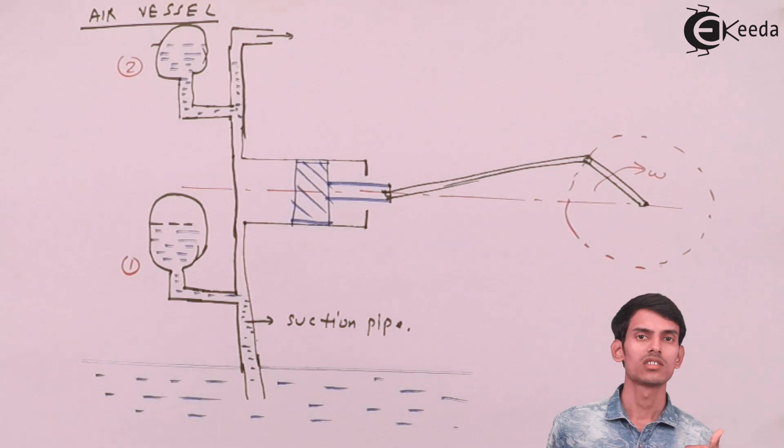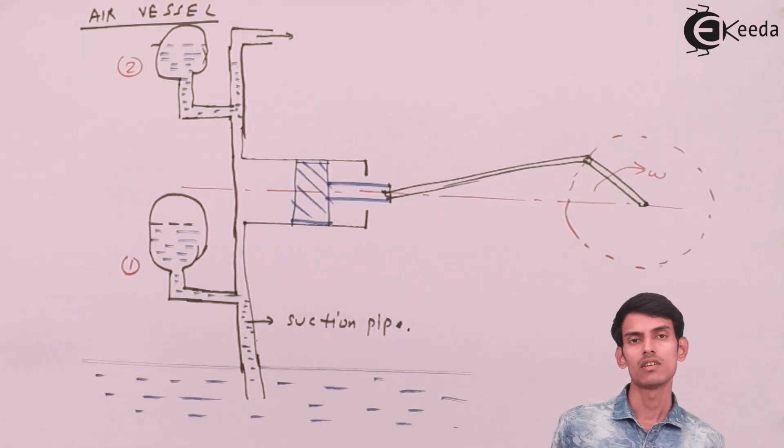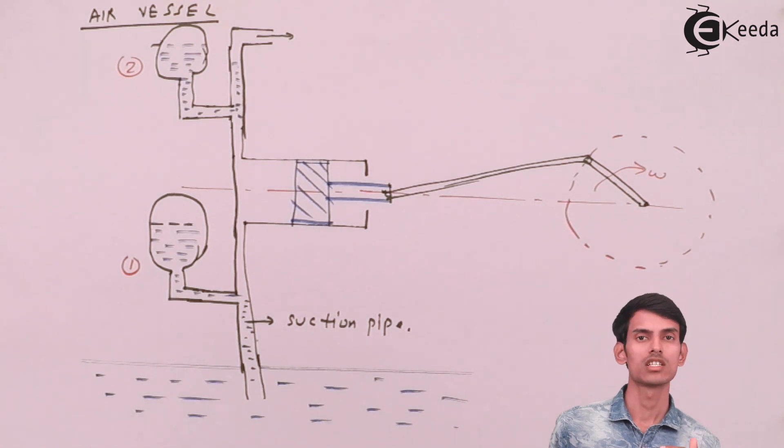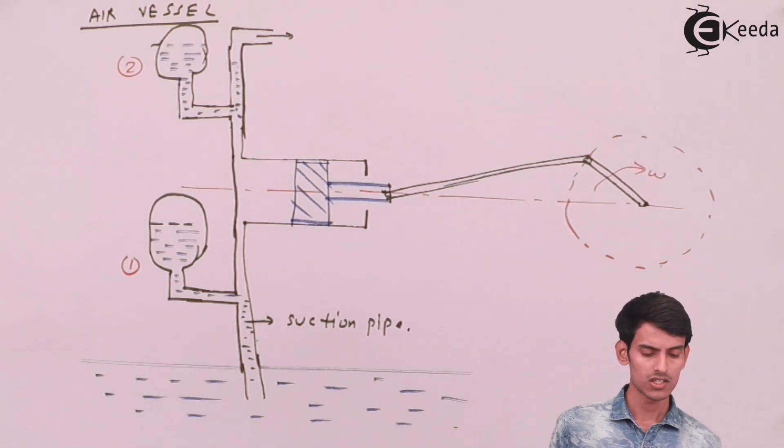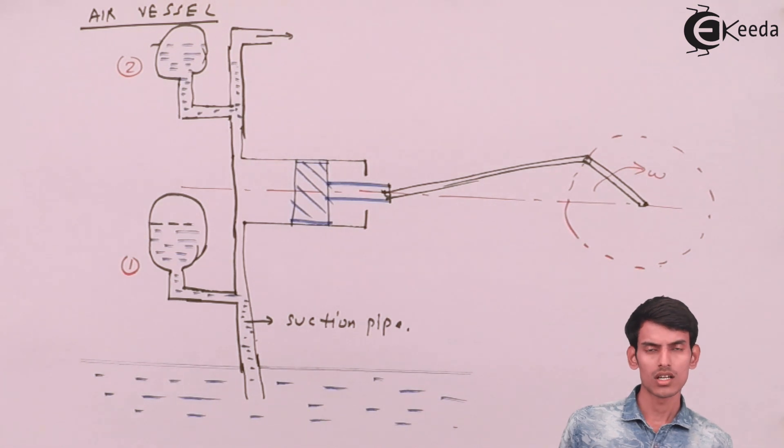So it is a vessel that is attached on the delivery pipe and as well as on the suction pipe. So it is filled with air. Now the question arises, what does it do?